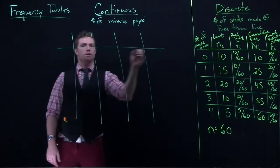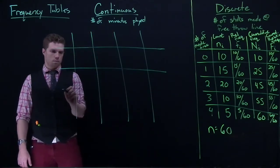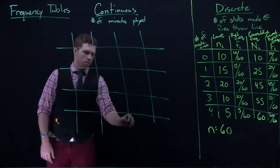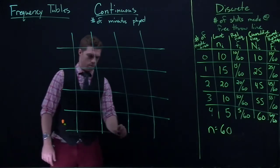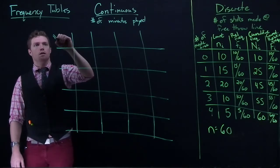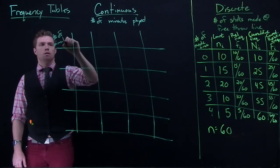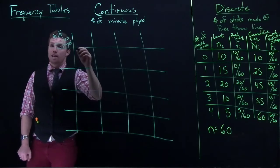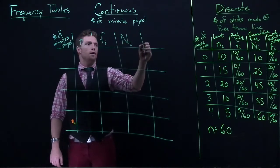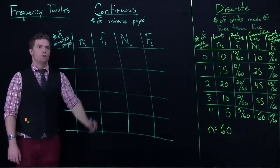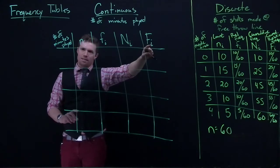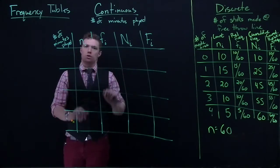We're going to have basically the same format here. We're still going to have these four columns. We're going to label this guy the same thing. It's going to be whatever we are measuring. This is going to be number of minutes played. And we're going to say how many games did this happen? So once again we're going to put Ni, Fi, capital Ni, capital Fi. This is our count, relative frequency, cumulative frequency, our cumulative count, and our cumulative relative frequency. Same labels as over there.